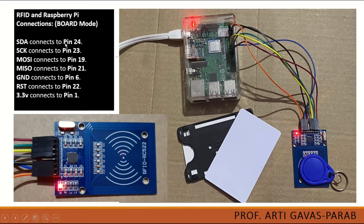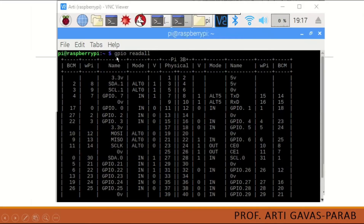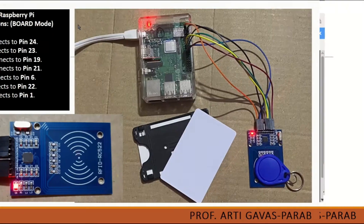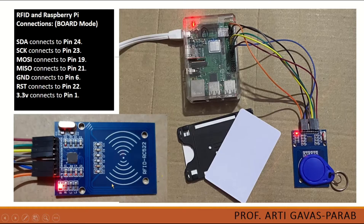The pin specifications for how to connect those pins are also given. In the program we are using board mode, so according to the physical pin specification we connect the RFID sensor to the pins of Raspberry Pi. The GPIO readall command will give you all the pin specifications, and this pinout will help you find out which pins are to be connected to the RFID sensor.